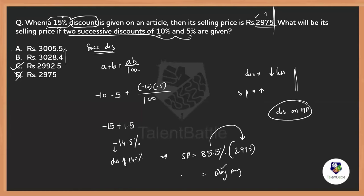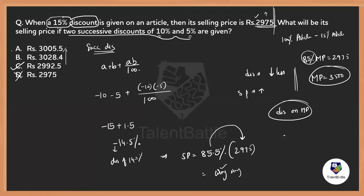So first we need to find the marked price. From the first condition: a 15% discount gives a selling price of 2975, which means 85% of the marked price equals 2975. Calculating this gives a marked price of 3500. Now apply 14.5% discount on 3500: 85.5% of 3500 = 2992.5, which is option C. Don't make such mistakes.